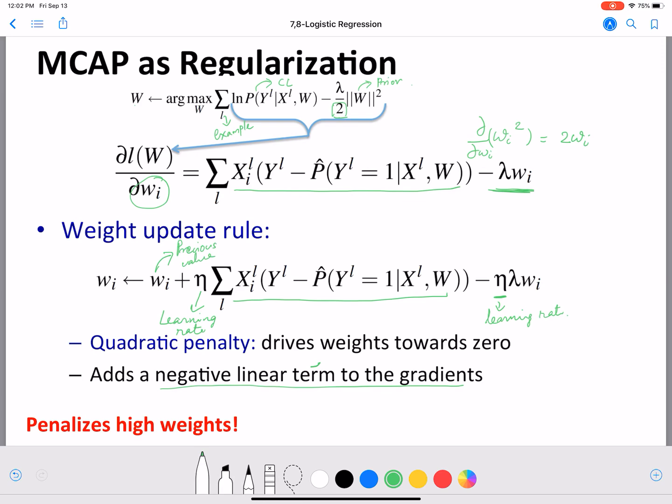So essentially when we introduce a prior we have a similar effect of penalizing high weights. That's why MCAP could be used as regularization as well and often is way more effective than using MCLE because it solves the problem of having higher weights which can lead to overfitting.